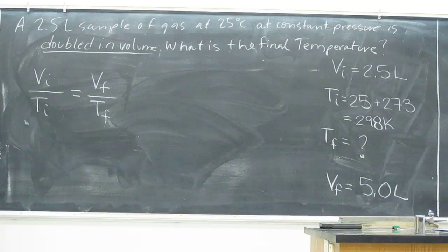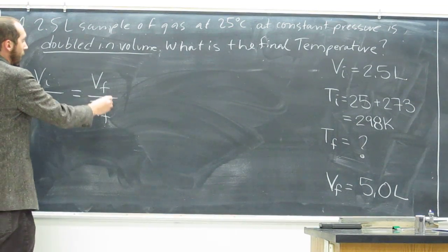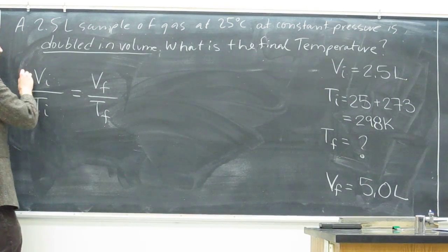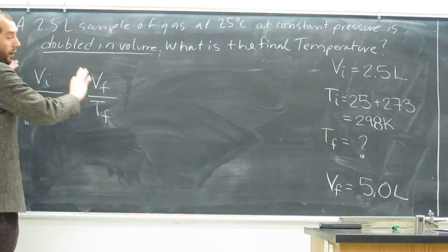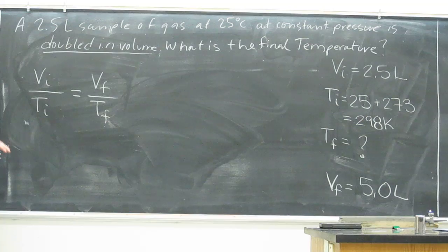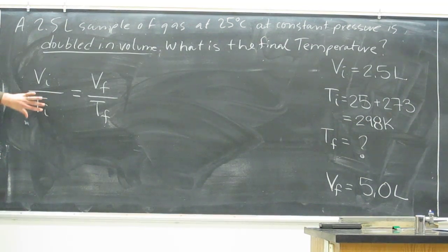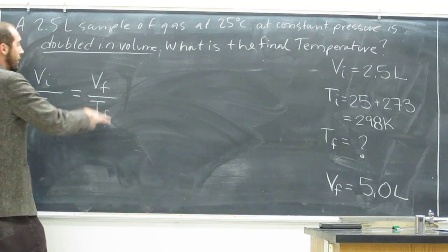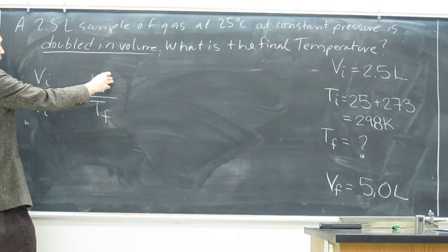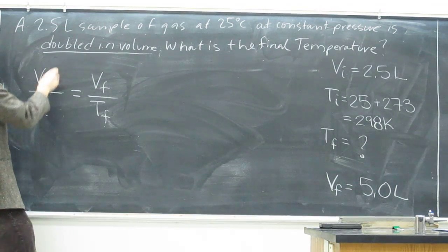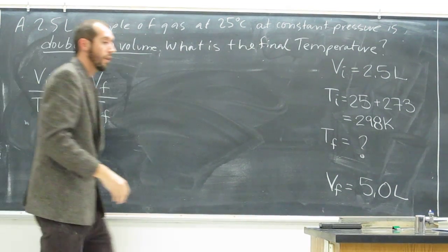So we want the final temperature, so we're going to have to get this variable by itself. What we can do with these equations is just invert them, so we can put final temperature over final volume if we do the same to the other side. So let's just go ahead and do that,